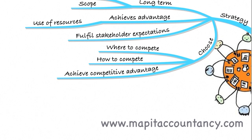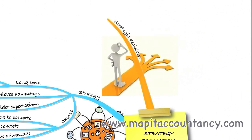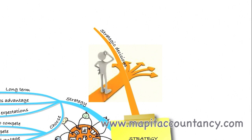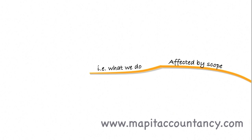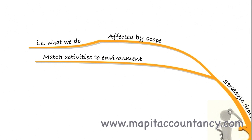Johnson, Scholes and Whittington also looked at strategic decisions and the characteristics that make decisions strategic rather than just decisions. Any strategic decisions made will be affected by the scope of the business — what that business actually does. We also need to try to match the activities we seek to do to the environment: is the industry in decline? Should we be looking at new industries, new markets, or trying to improve market share and exploit the industry we're currently in?